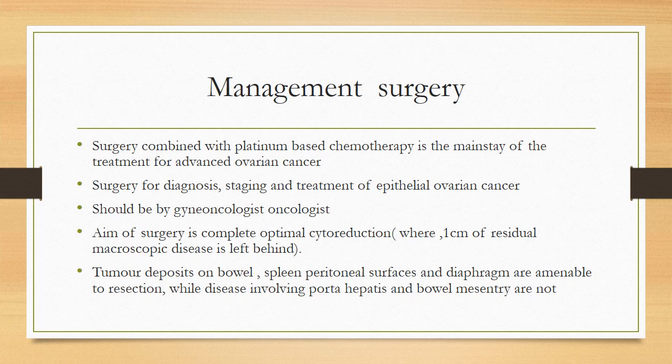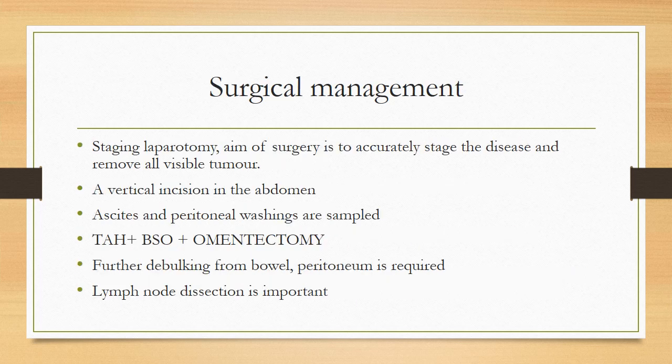The aim is complete optimal cytoreduction, leaving less than 1 cm of residual macroscopic disease. Tumour deposits in the bowel, spleen, peritoneal surface, and diaphragm are amenable to resection, while disease involving the porta hepatis and bowel mesentery is inoperable. Staging laparotomy is done by a vertical incision to gain access to all areas of the abdomen. Ascites and peritoneal washings are sampled; total abdominal hysterectomy, bilateral salpingo-oophorectomy, and omentectomy are performed. Further debulking from bowel and peritoneum and lymph node dissection are also important, particularly in early stage where occult metastasis has been found.